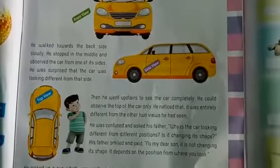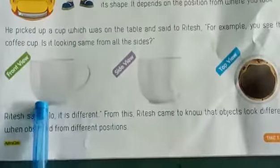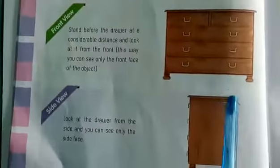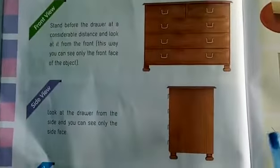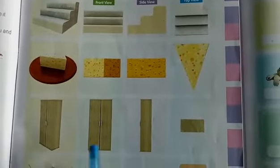And one more example is the cup — these three views: front view, side view, and top view. And more examples are there: cell, window, door, sofa, steps, and cake. Here these three views are there — front view, top view, and side view.